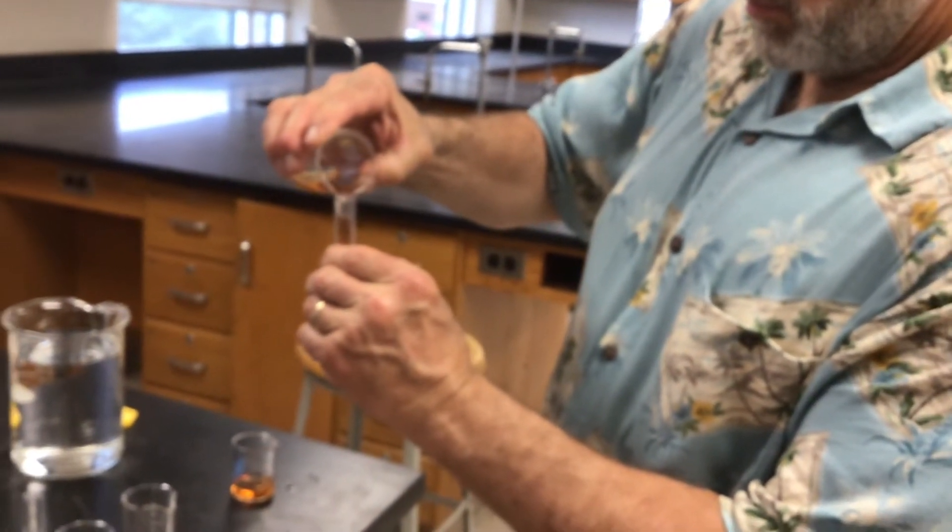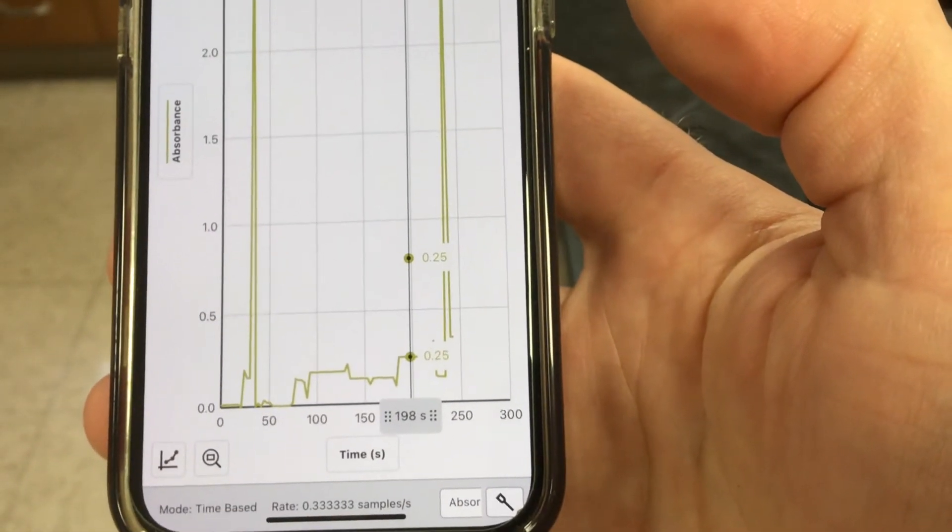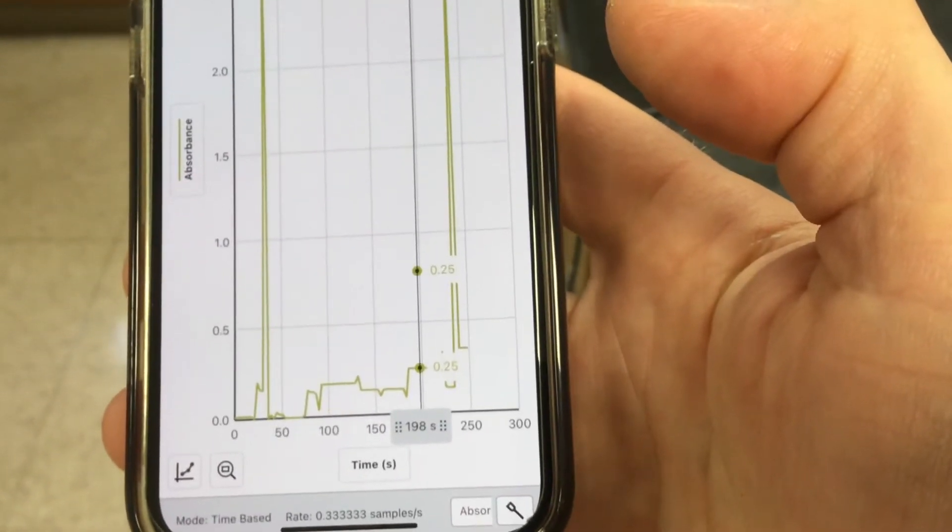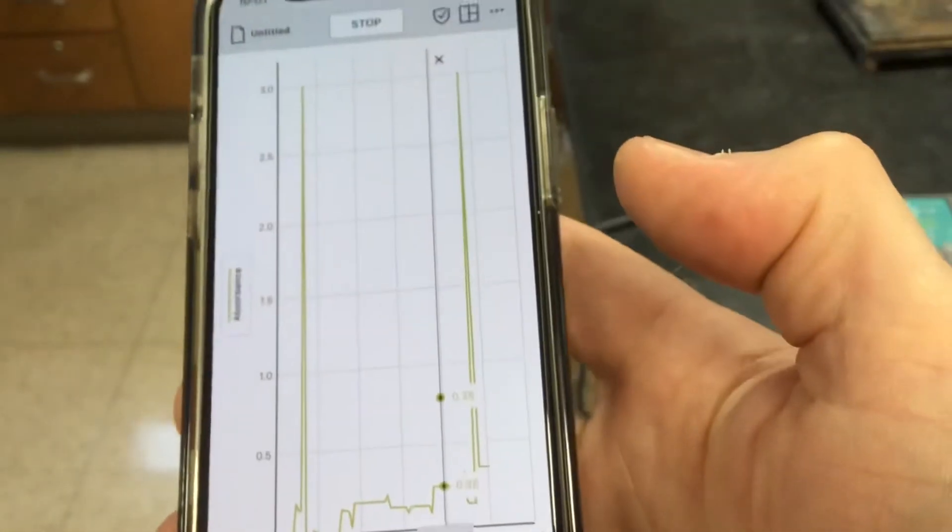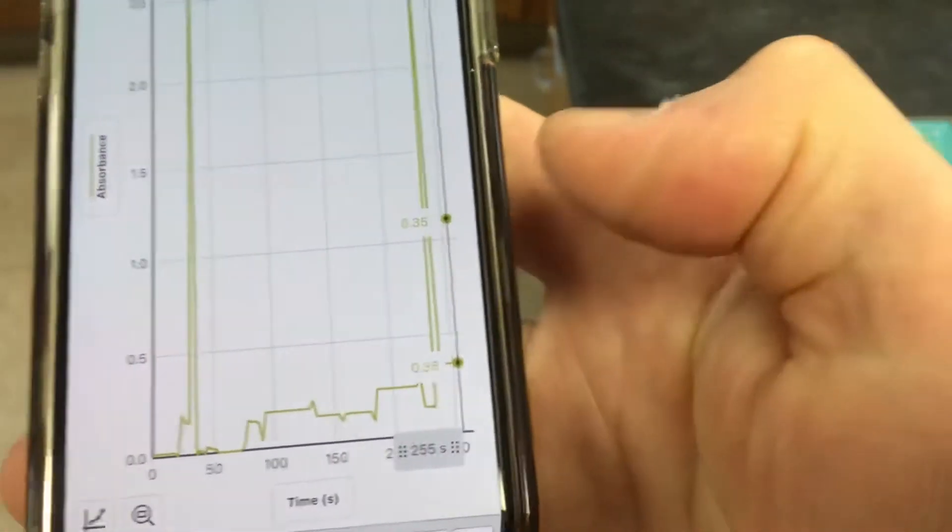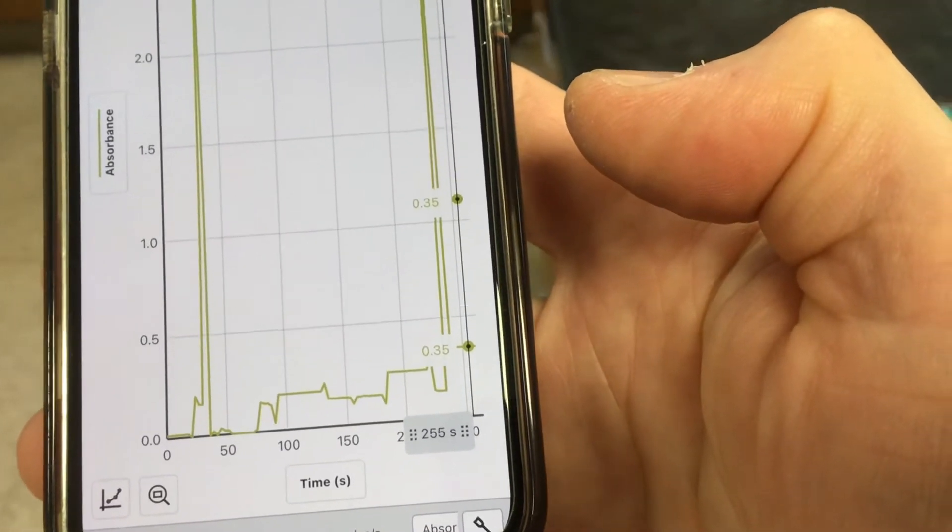Okay. Here comes number three. The cuvettes going in and out of the spectrometer will cause that jump there, but then we just wait for it to go stable. Our new absorbance there for trial three, 0.35.